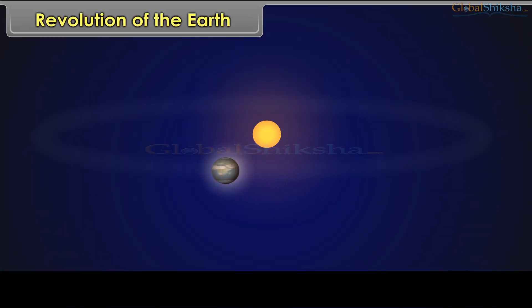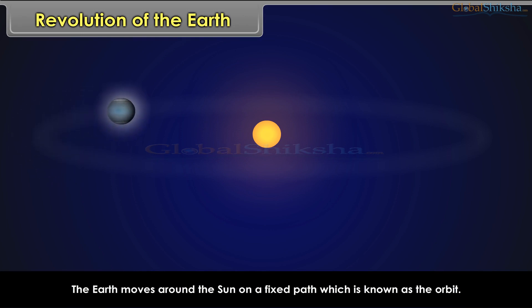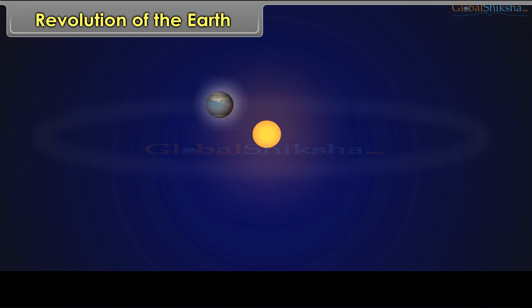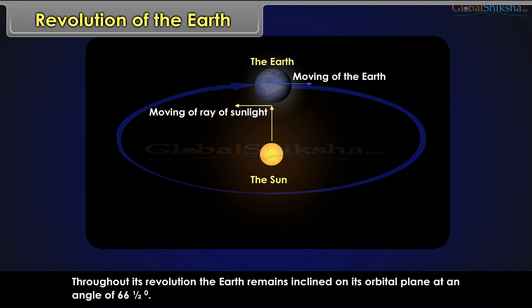The earth moves around the sun on a fixed path which is known as the orbit. The orbit of the earth is elliptical, and the earth completes its revolution in one year — 365 and one-fourth days. Throughout its revolution, the earth remains inclined on its orbital plane at an angle of 66 and a half degrees.